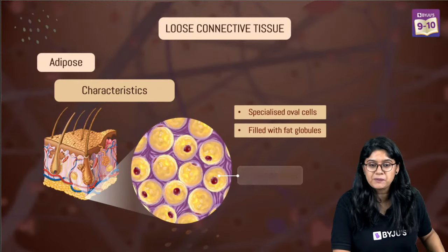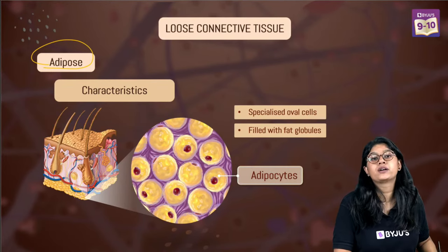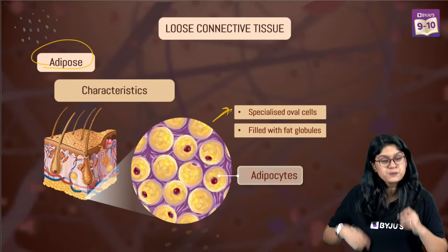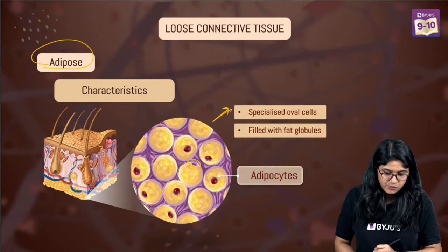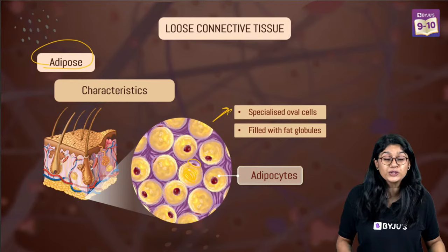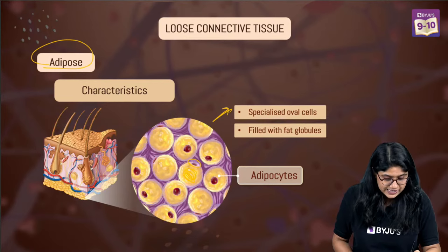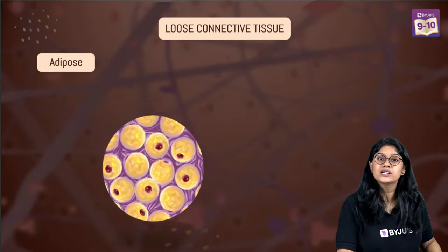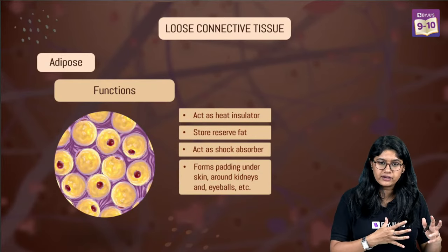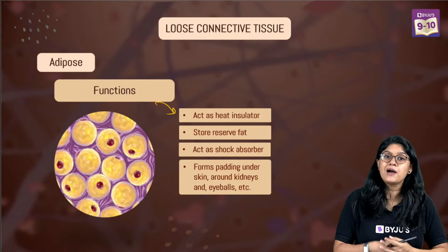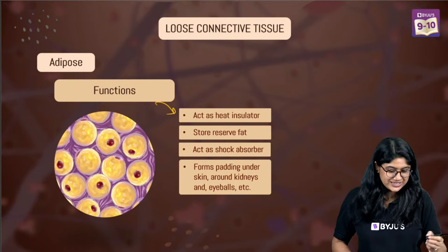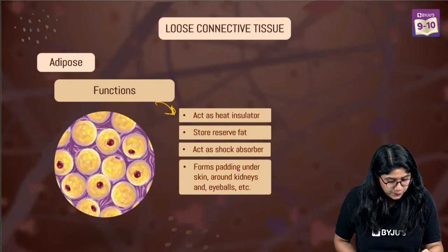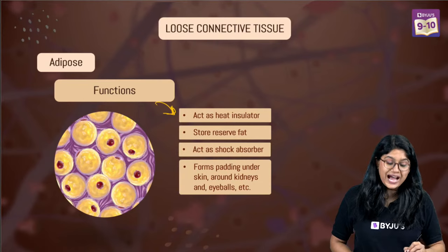Adipose tissue - many of you were asking about it. They have very specialized oval cells with a small nucleus, and the majority of the cell is fat. They are filled with fat globules, and these cells are called adipocytes - remember the name of the cells. They are present between the skins and the organs, basically all around the body. They act as a heat insulator, actually helping us in holding the heat in the body. If we don't have adipose tissue, our body will not be able to maintain temperature.